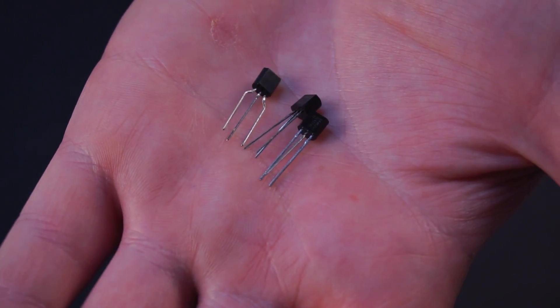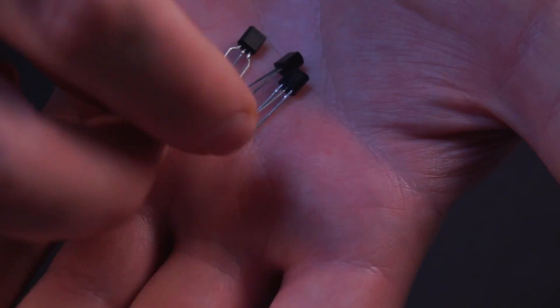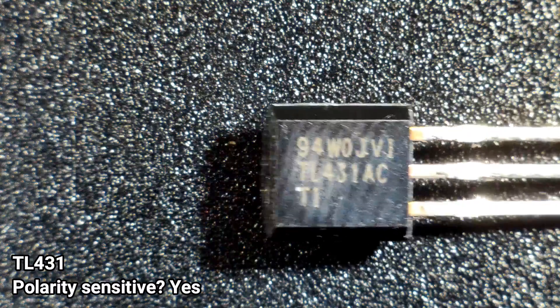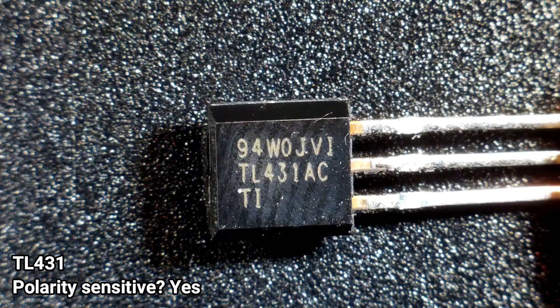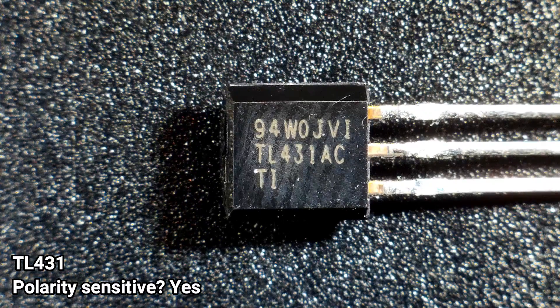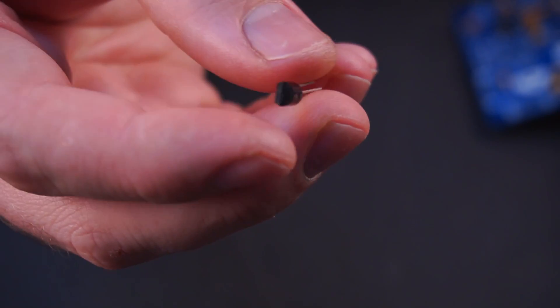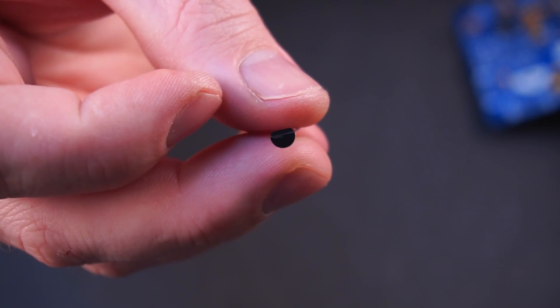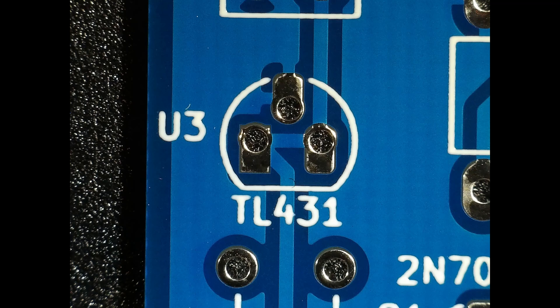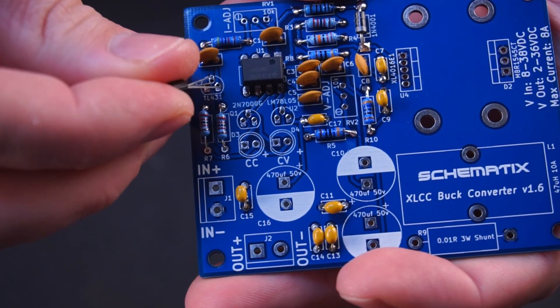Next we have three similar looking components, but all three of these components are unique so make sure not to get them mixed up. First I'll install the TL431. Looking from the top down notice how this component is shaped like a capital D. This D shape is also printed on the board, so make sure to orientate the components so that they match the printing on the board.